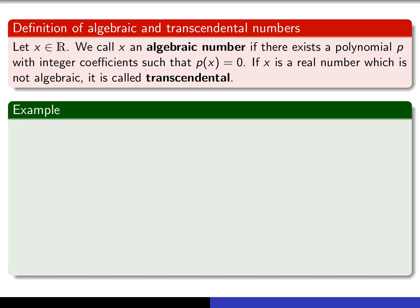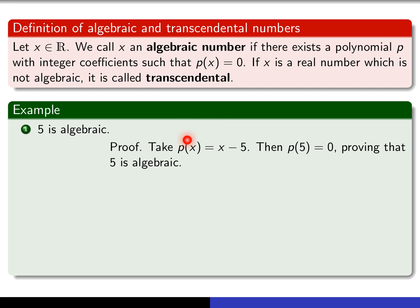Let's look at a few examples. First, 5 is an algebraic number. To convince yourself of that, you have to show that you can produce a polynomial p(x) such that it has integer coefficients only and such that 5 is a root — that is, p(5) = 0. If we take the polynomial p(x) = x − 5, that is a polynomial having integer coefficients, namely 1 and −5. Replacing x by 5, we see that p(5) = 0, which proves that 5 is an algebraic number.